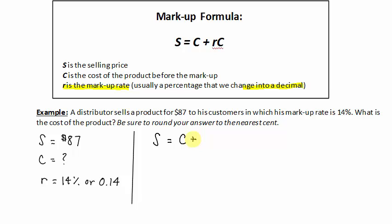S equals C plus rC. The selling price is $87, equal to the cost, which we don't know, plus the rate, which is 14%, or 0.14C.